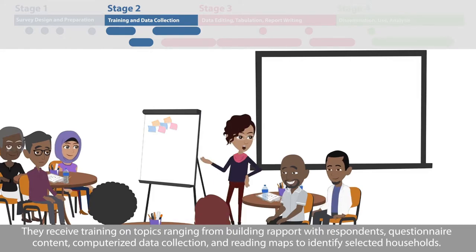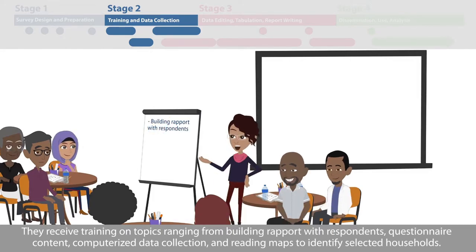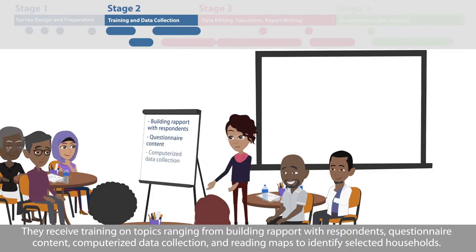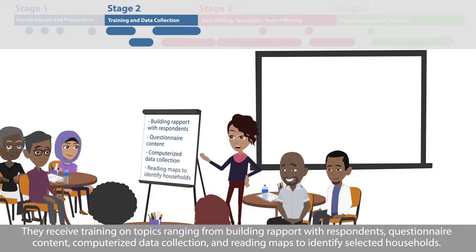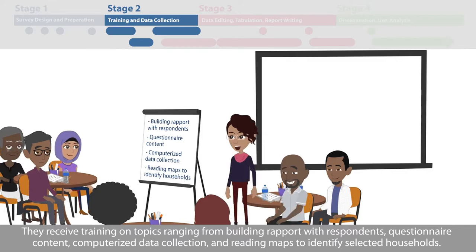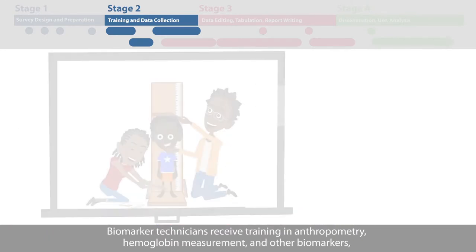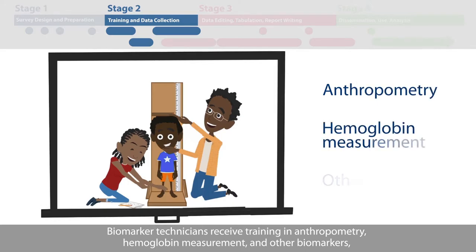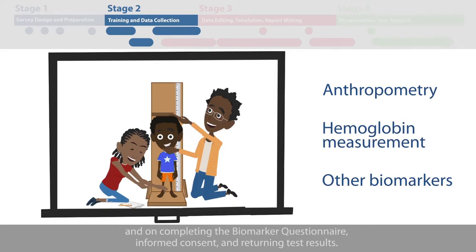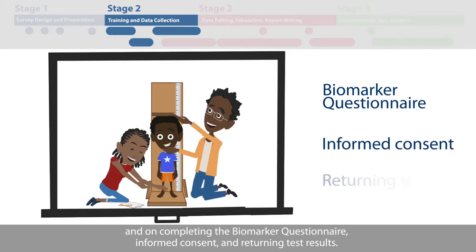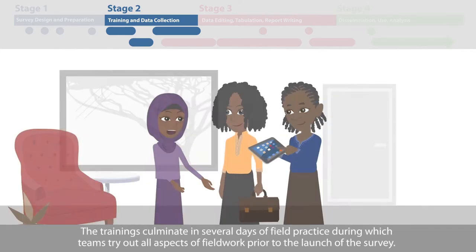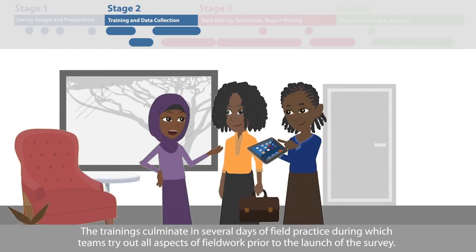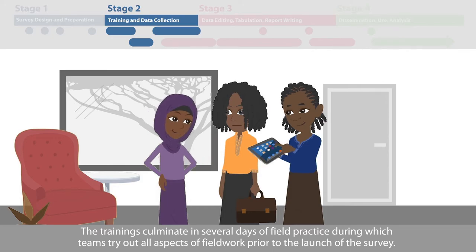Field workers receive training on topics ranging from building rapport with respondents, questionnaire content, computerized data collection, and reading maps to identify selected households. Biomarker technicians receive training in anthropometry, hemoglobin measurement, and other biomarkers, and on completing the biomarker questionnaire, informed consent, and returning test results. The trainings culminate in several days of field practice during which teams try out all aspects of field work prior to the launch of the survey.